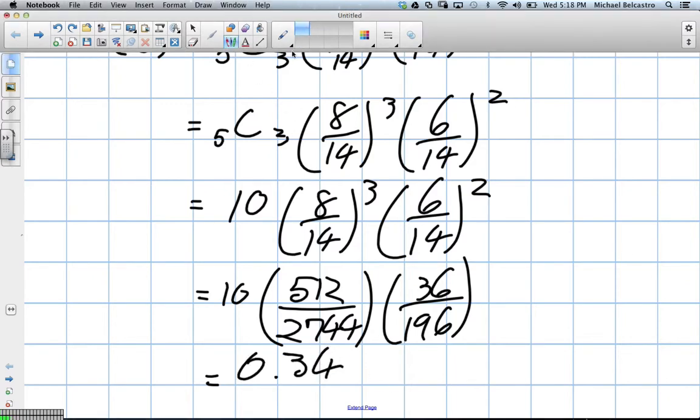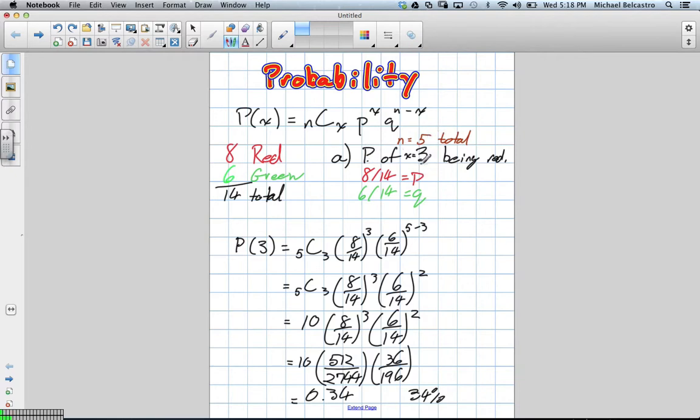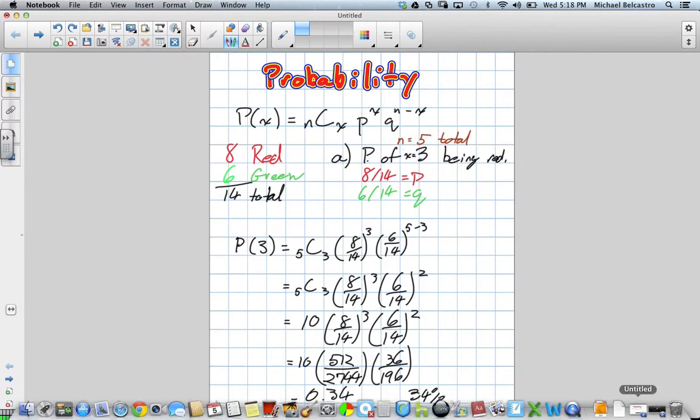The value we got was 0.34 in the end when we multiplied all these together, which means there's about a 34% chance that if we pull out five candies, that exactly three of them will be red.